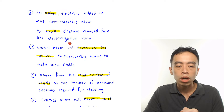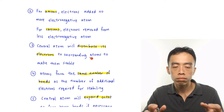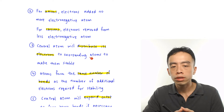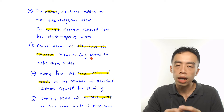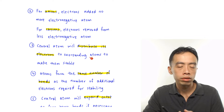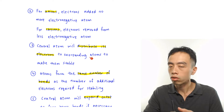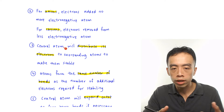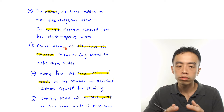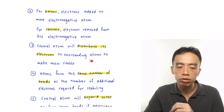Idea number three: the central atom will distribute its electrons to the surrounding atoms to make them stable. It is the responsibility of the central atom to make the surrounding atoms happy. The surrounding atoms will ask the central atom to give a certain number of electrons in order to be stable, and the central atom will accommodate and distribute its electrons to make the surrounding atoms stable.